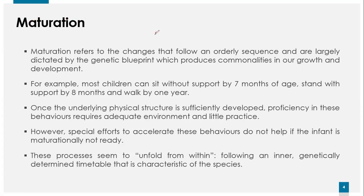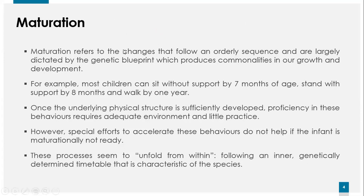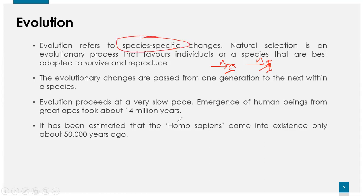So we have covered growth, development, and maturation. Next is evolution. Evolution refers to species-specific changes — for example, from monkey to man. Homo sapiens is a species. Natural selection is an evolutionary process — the fittest animal will survive. Individuals that are best adapted to survive and reproduce will persist through conditions such as pandemics, epidemics, and natural disasters.